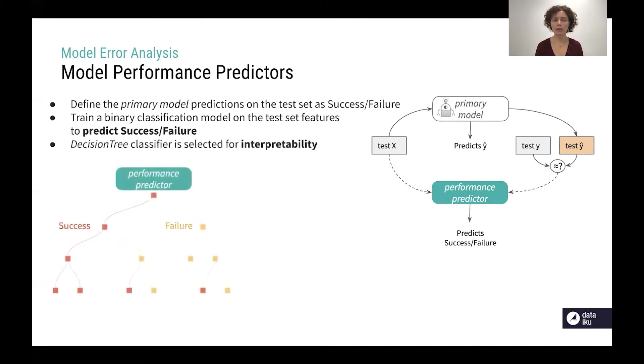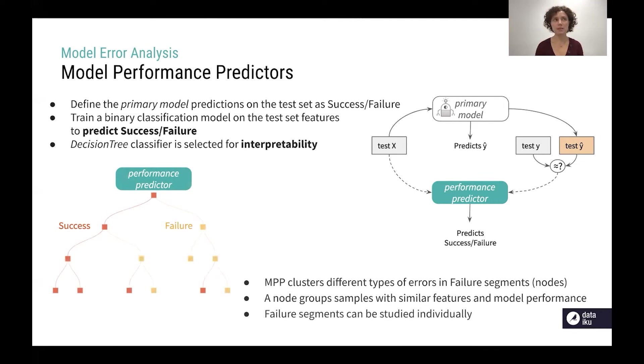Usually we take a decision tree classifier as a model performance predictor because it's easier to interpret. This decision tree will cluster different type of errors in failure segments, those are the decision tree nodes, and each node groups samples with similar features and model performances. A failure node represents a specific different kind of error and those are meant to be studied individually to simplify the analysis.